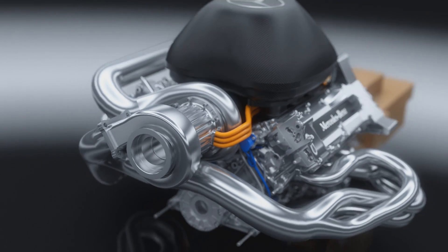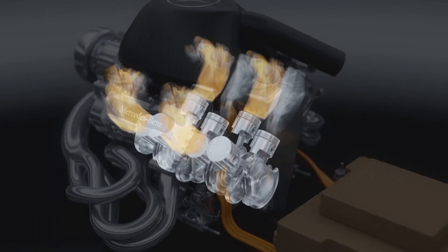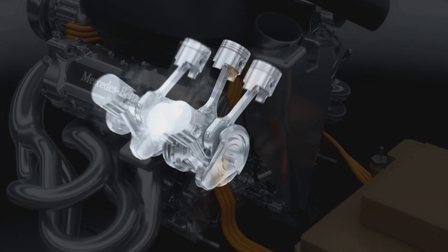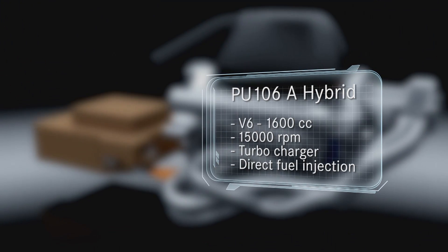The new engine regulations require downsizing from a 2.4-litre V8 to a 1.6-litre V6. Maximum revs have dropped from 18,000 rpm to 15,000.